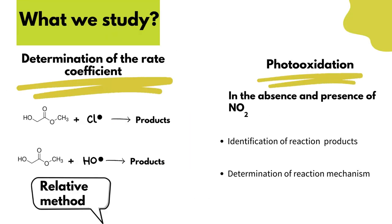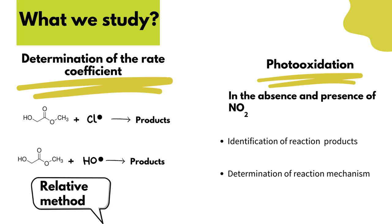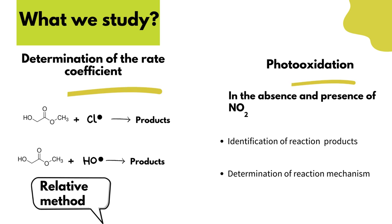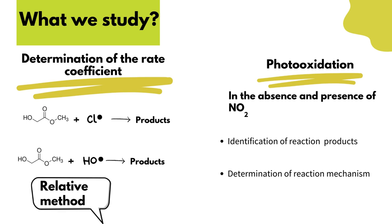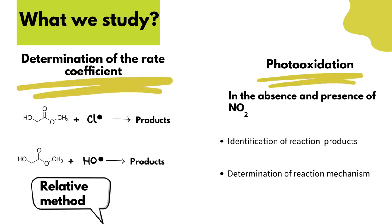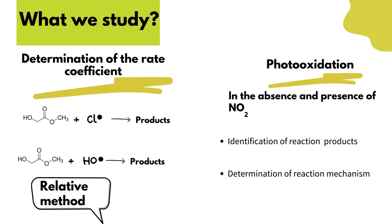In the present study, the gas phase rate coefficient of the reaction between MG and chlorine atoms was determined, as well as the corresponding one with hydroxyl radicals, in order to determine the influence of both reactions on the atmospheric lifetime. The gas phase photo-oxidation of MG in the absence and presence of nitrogen dioxide was also studied to determine its reaction products and reaction mechanism.